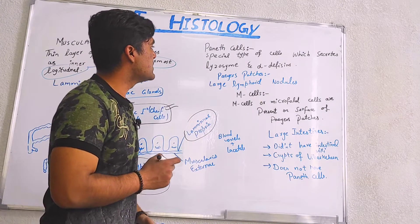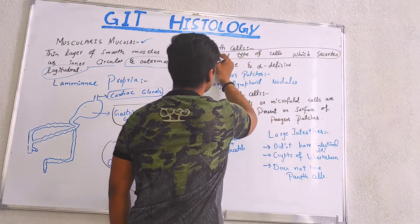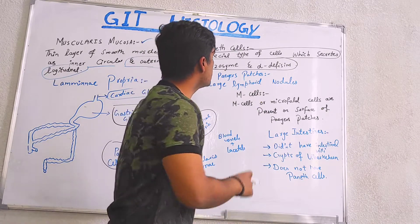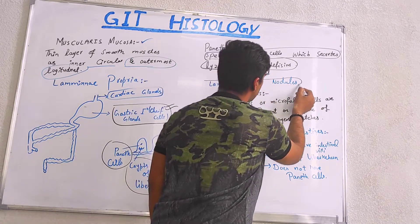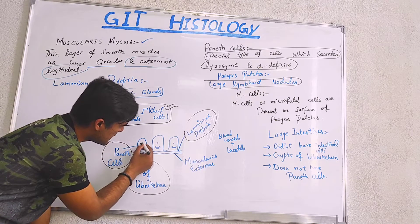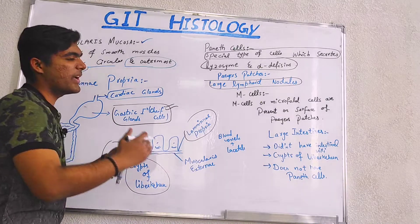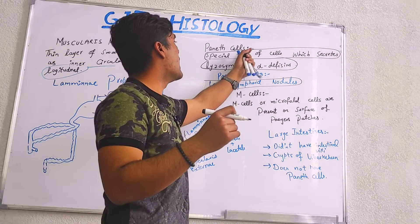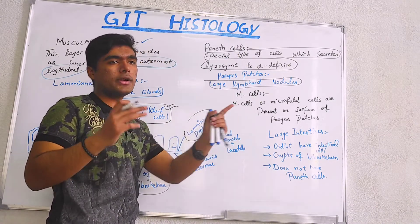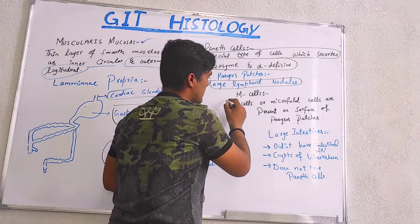Talking about Paneth cells, they are basically special type of cells which secrete lysozymes and alpha-defensin. And Peyer's patches, they are large lymphoid nodules. This basic structure, we have a lymphoid nodule, and when they become very large, we say that we have a Peyer's patch. On surface of these lymphoid nodules, these Peyer's patches, we have M cells that are going to be present. We also name them as microfold cells.